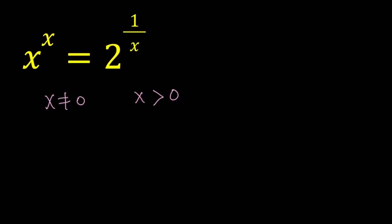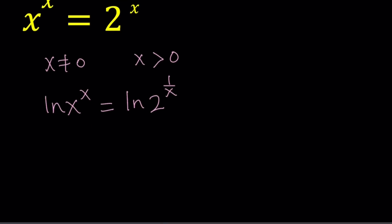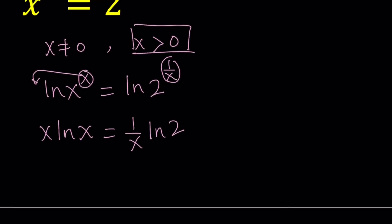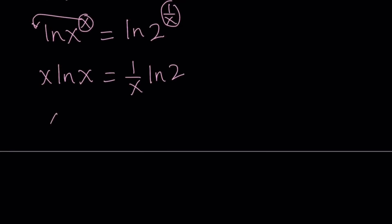And then we're going to take the log of both sides under these conditions. If we do that, we're going to get rid of all the exponents, so it's going to be a little easier to solve. We're going to move the x and the 1 over x — that is the rules for logarithms. So if you move the x to the front, it's going to be x ln x, and if you move the 1 over x, it becomes 1 over x times ln 2. Now notice that ln 2 is a constant. We can multiply both sides by x, and if we do, we get x squared ln x equals ln 2.